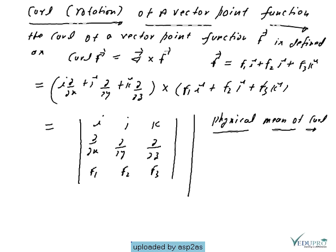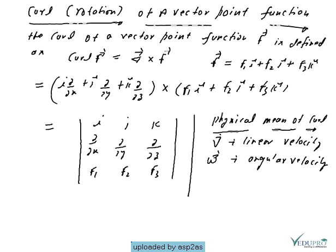The physical meaning of curl: if capital V is the linear velocity and omega is the angular velocity, then by the property of curl, curl of vector v is always equal to 2·omega. This is the physical meaning of curl.